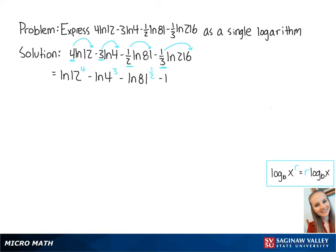This gives us the ln of 216 to the 1 third power, which equals the ln of 20,736 minus the ln of 64 minus the ln of 9 minus the ln of 6.